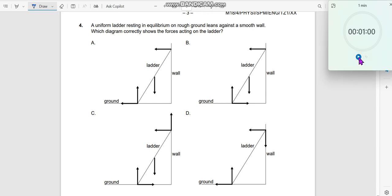Question number 4. A uniform ladder resting in equilibrium on the ground leans against a smooth wall. This is a smooth wall. And the moment I say a smooth wall, what does it tell you?